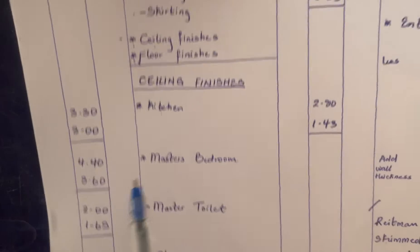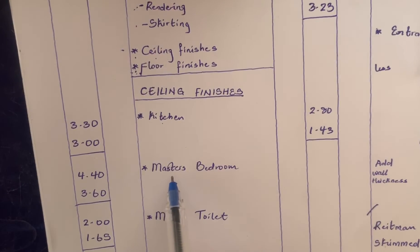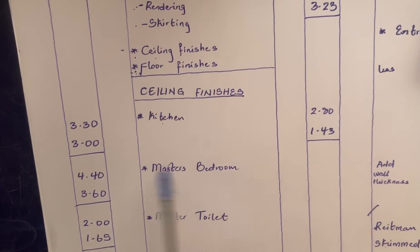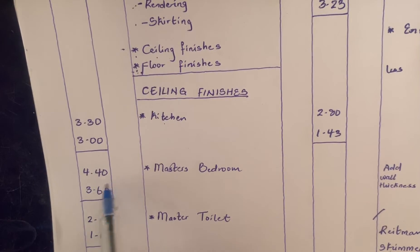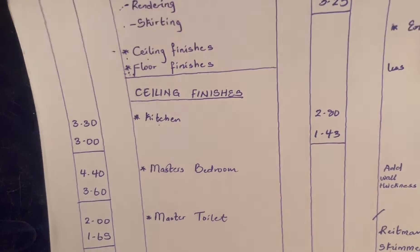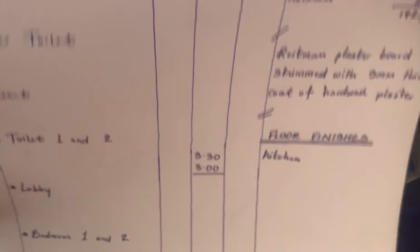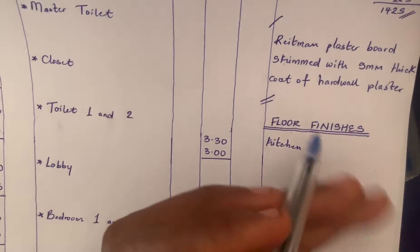The next one would be the master's bedroom. We have calculated the master's bedroom to be 4.40 by 3.60, so we'll book that.